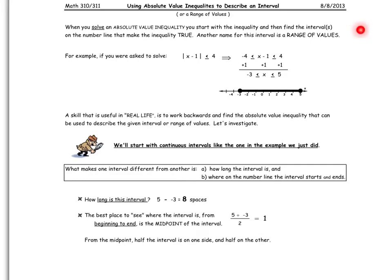When you solve an absolute value inequality, you start with the inequality and then find the interval or intervals on the number line that make the inequality true. Another name for this interval is range of values.